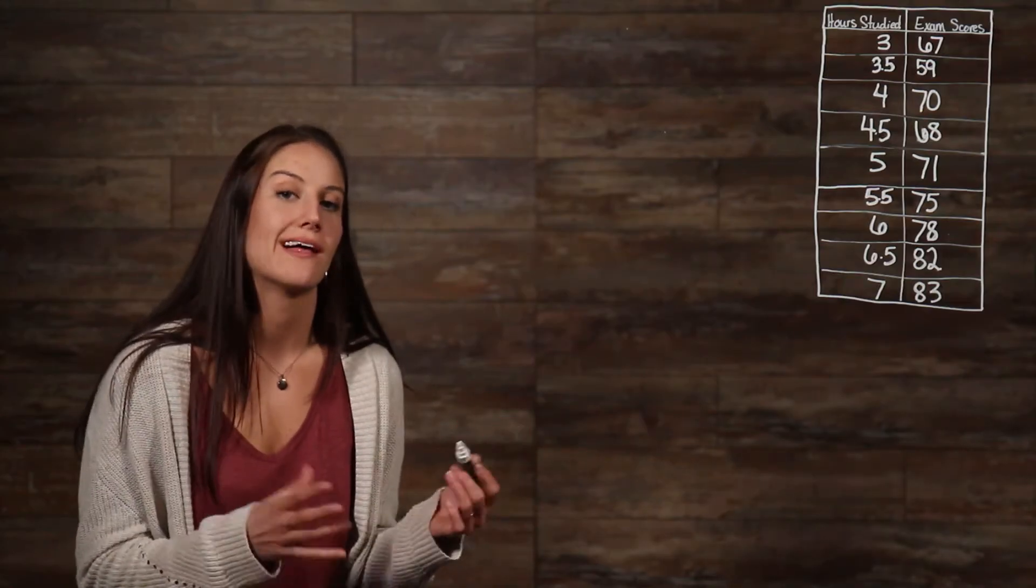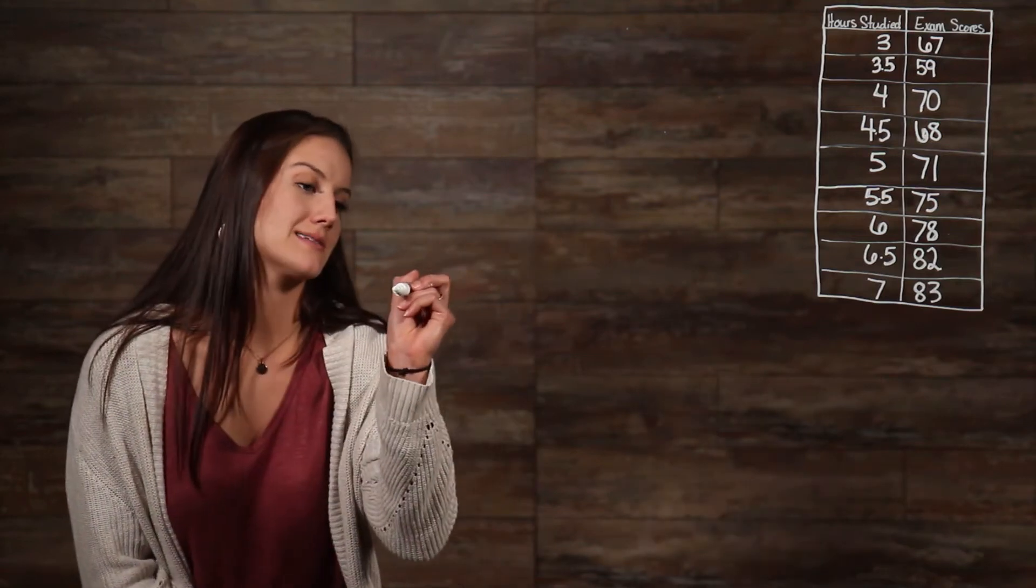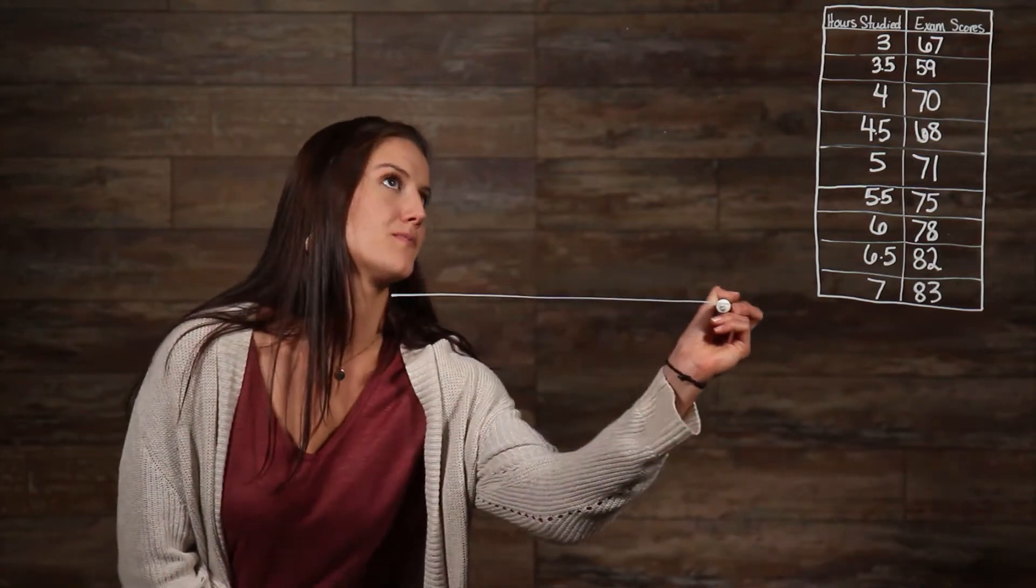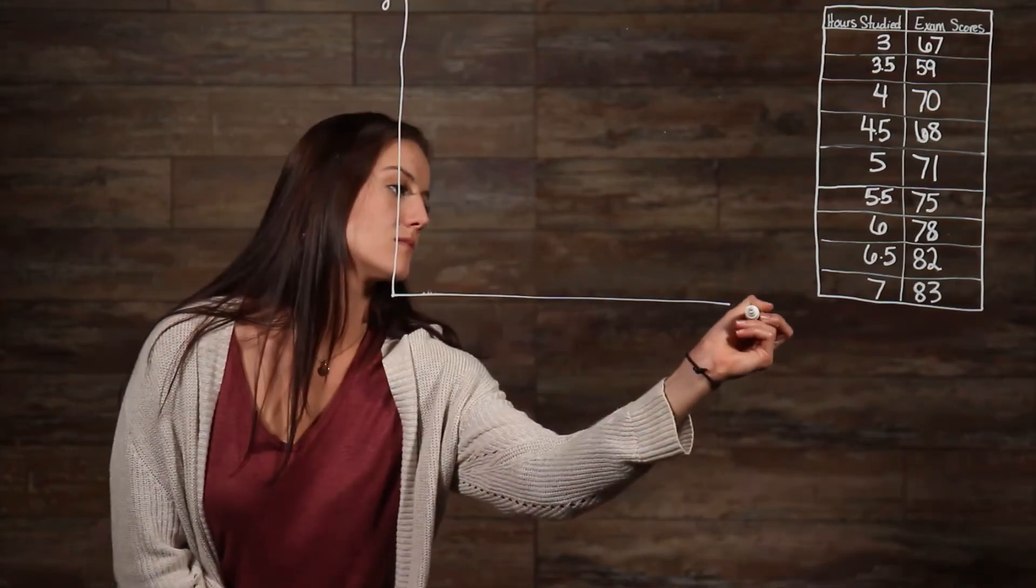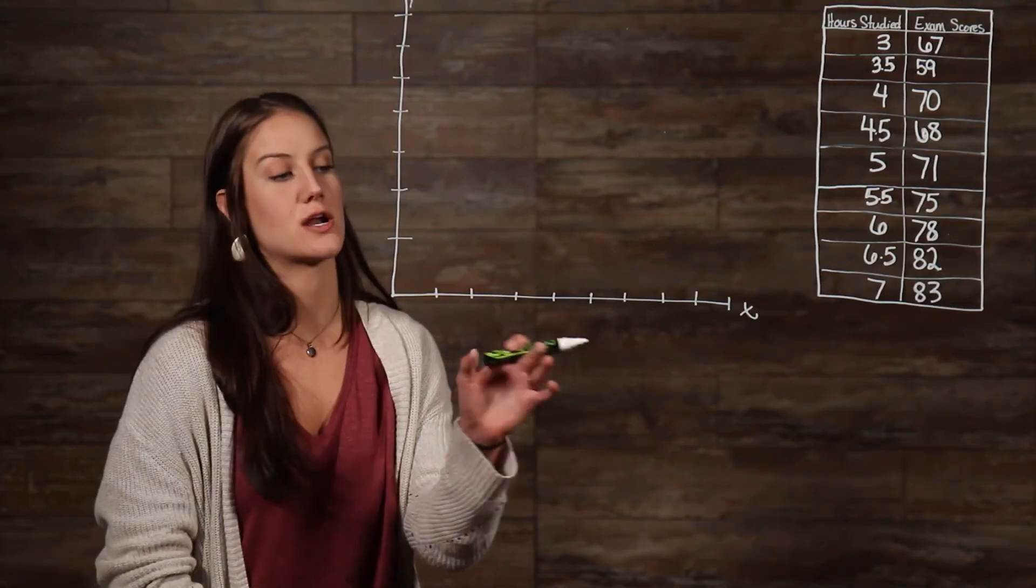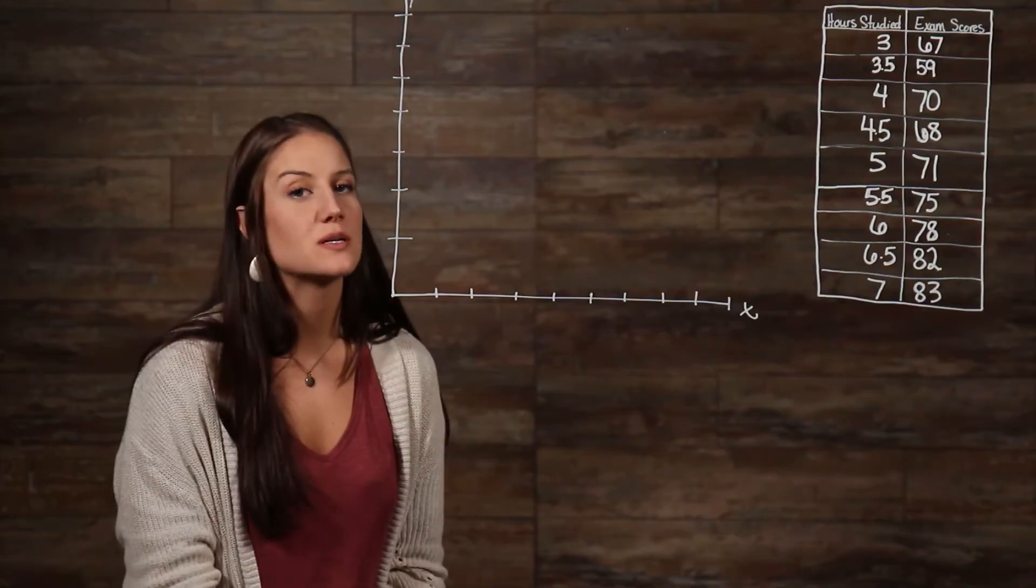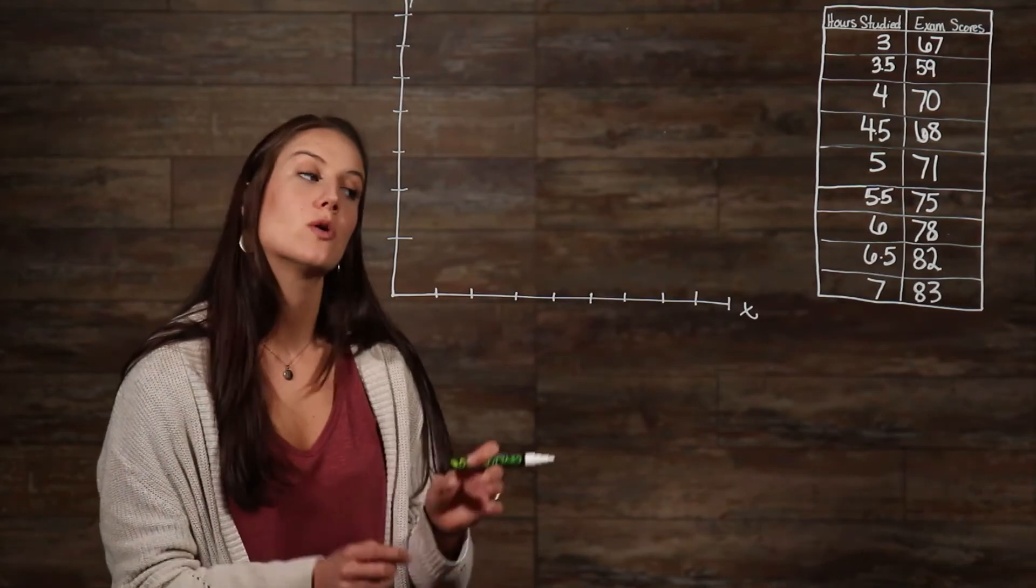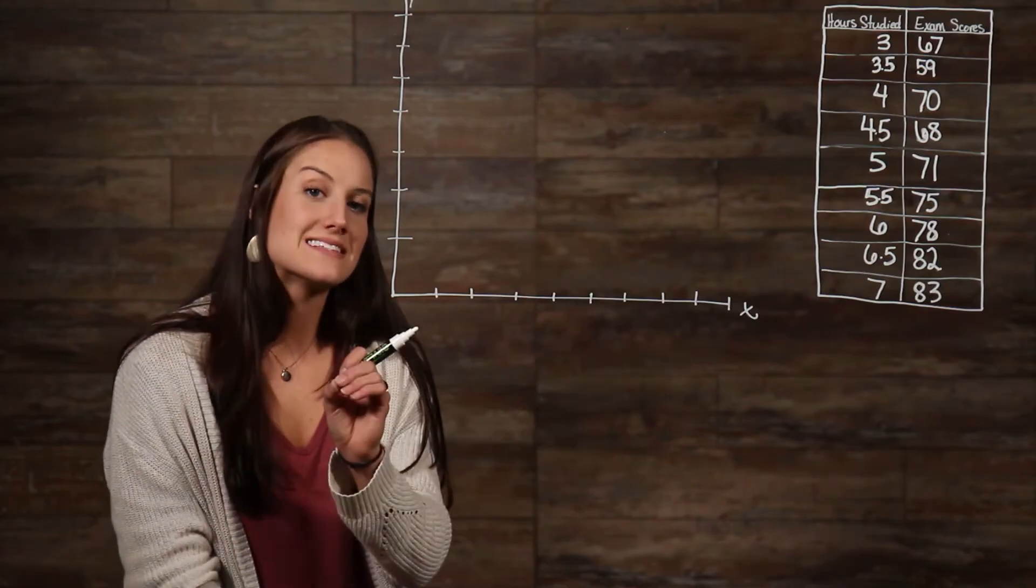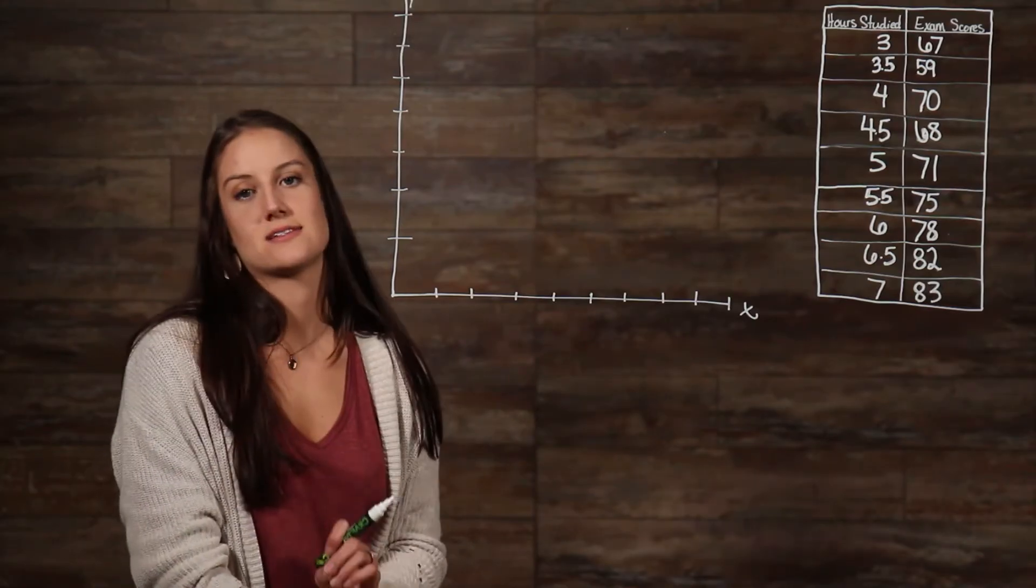We are going to set it up exactly like we would a line graph. We need our x and our y axis. Then we need to fill in our number lines. We know that time is our independent variable, because time is always the independent variable, so time will go on our horizontal axis here, and exam scores will go on our y axis.